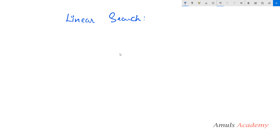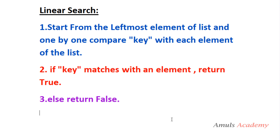Let me show you the steps first. The first step in linear search is to start from the leftmost element of the list and one by one compare the key with each element of the list. Here, key is the element which needs to be searched. The second step is: if the key matches with an element, return true; otherwise return false. These are the steps to follow when using linear search.